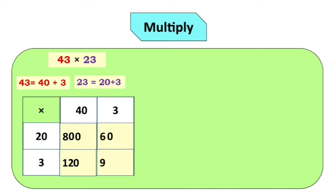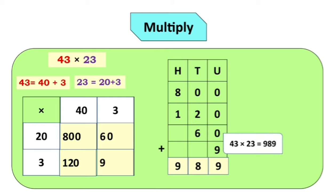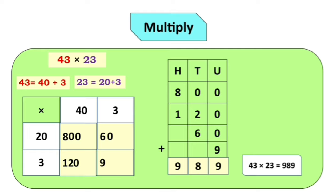Atha aplella multiplication che je answers aale liya aahe — 800, 60, 120, and 9 — yanza addition karaichya aahe. So 800 plus 120 plus 60 plus 9. 0 plus 0 plus 0 plus 9 is equal to 9. 0 plus 2 plus 6 is equal to 8. And 8 plus 1 is equal to 9. So the final answer is 43 × 23 is equal to 989.